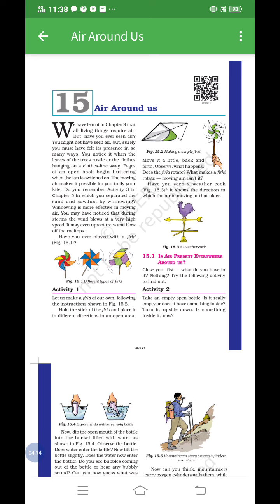Now how do you have to place the firki? There are different diagrams of firki given in figure 15.1. In this activity, hold the stick of the firki and place it in different directions in an open area. Move it a little back and forth, and what will happen? The firki will rotate. Now why is this firki rotating? Because there is moving air.